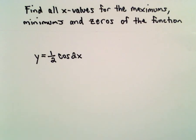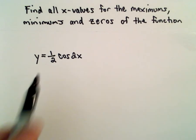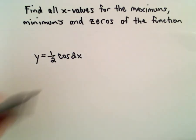Here we're going to find the x-values for the maximums, minimums, and zeros of the function y = (1/2)cos(2x).